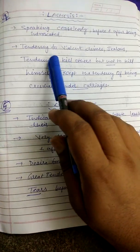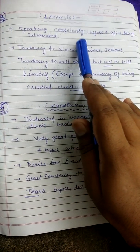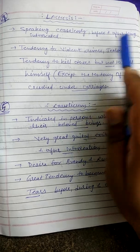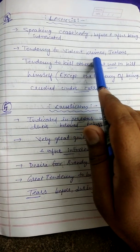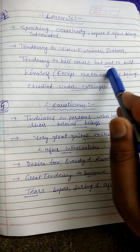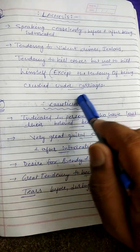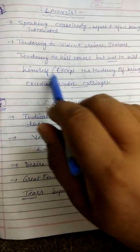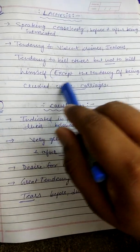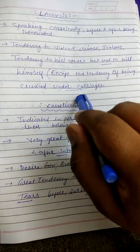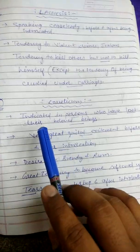Lachesis — speaking and expressing before and after being intoxicated. Tendency to violent crimes, jealousy, tendency to kill others but not to kill himself — except a tendency of being crushed under a carriage. Lachesis mein yaha pe doosron ko murder karne ki tendency hoti hai, but khud ko dar rehta hai ki woh kisi carriage ke neeche crush na ho jaye.